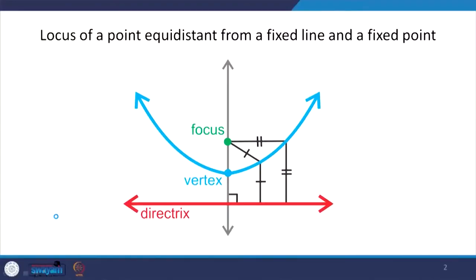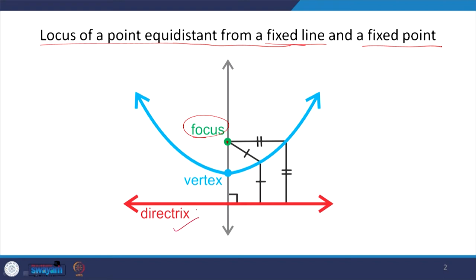Circle is one. The other which we have already talked about is a parabola. A parabola is the locus of a point which is equidistant — at the same distance — from a fixed line and a fixed point. This fixed point is called the focus of the parabola, and this fixed line is called the directrix. The locus of this point which is at equidistance from these two is the parabola.